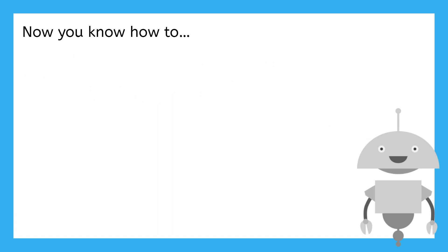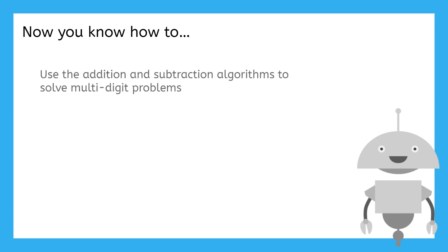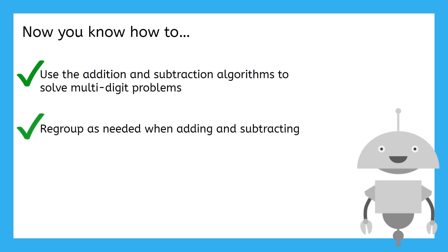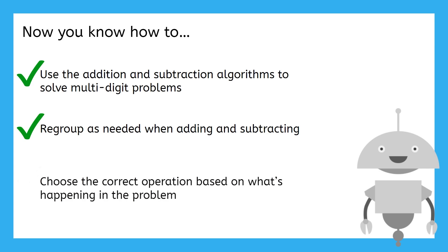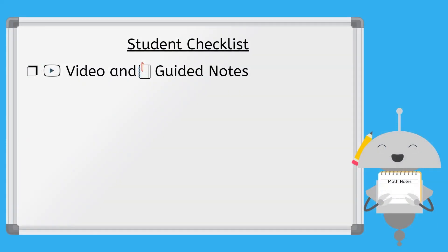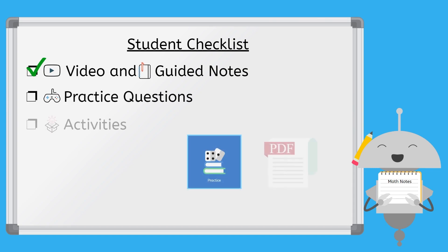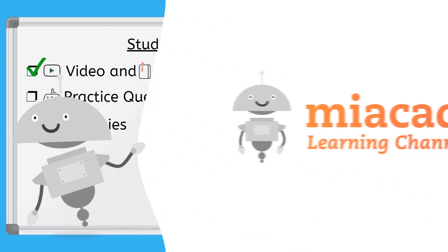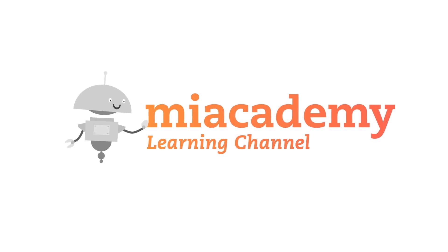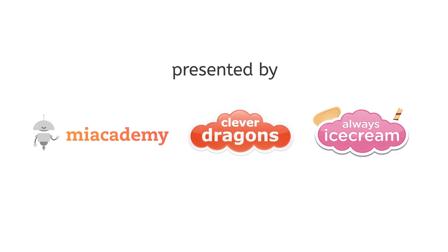Let's review what we've learned about solving addition and subtraction problems. You know how to use the addition and subtraction algorithms to solve multi-digit problems. You also know to regroup as needed when adding and subtracting, and how to choose the correct operation based on what's happening in the problem. Well done, mathematicians! Now that you've finished the video and the guided notes, be sure to complete the practice questions and the extension activities that go with this lesson. And remember, in math as in life, practice makes progress. Keep searching for solutions, mathematicians, and I'll see you next time!